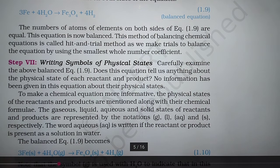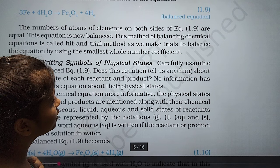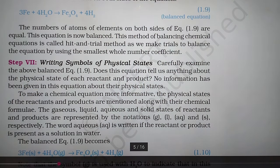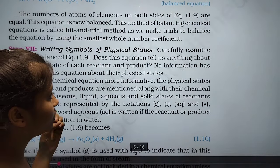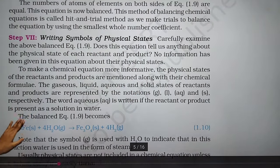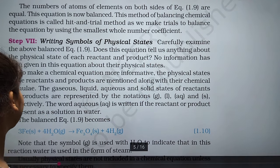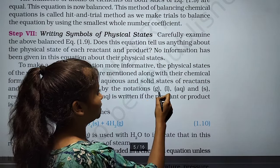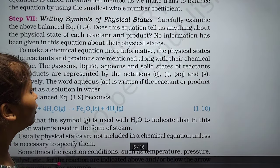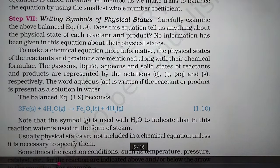Writing symbols of physical state: does the balanced equation tell us anything about the physical state of each reactant and product? No information about physical states has been given. To make a chemical equation more informative, the physical states of reactants and products are mentioned along with their chemical formulas — gaseous (g), liquid (l), aqueous (aq), and solid (s). The word 'aqueous' is used when a reactant or product is present as a solution in water.